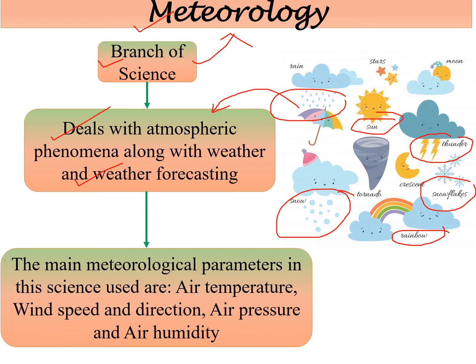The main parameters of meteorology that we use in this science are air temperature, wind speed, wind direction, and air humidity. These are the parameters we will study in our later classes about meteorology.